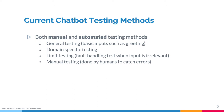The current chatbot testing methods consist of both manual and automated tests. Under these tests, there are general testing, where basic inputs for chatbots such as greetings are used; domain-specific testing, where one specifically focuses on a domain such as a subject for testing chatbots; limit testing, where one handles the tests when input is irrelevant; and manual testing, which is done by humans to detect possible errors.